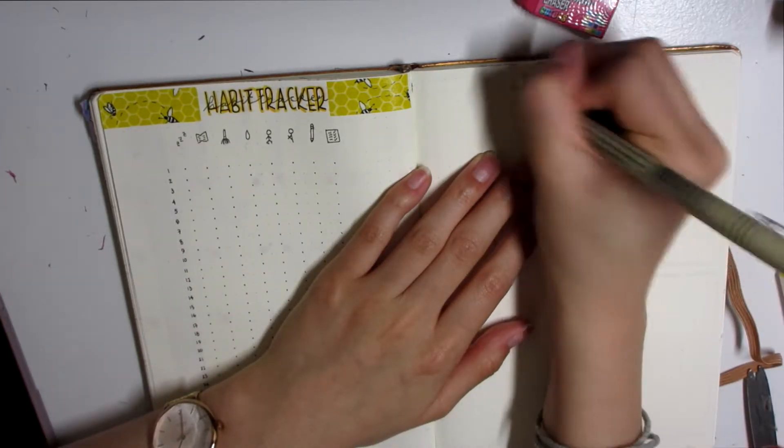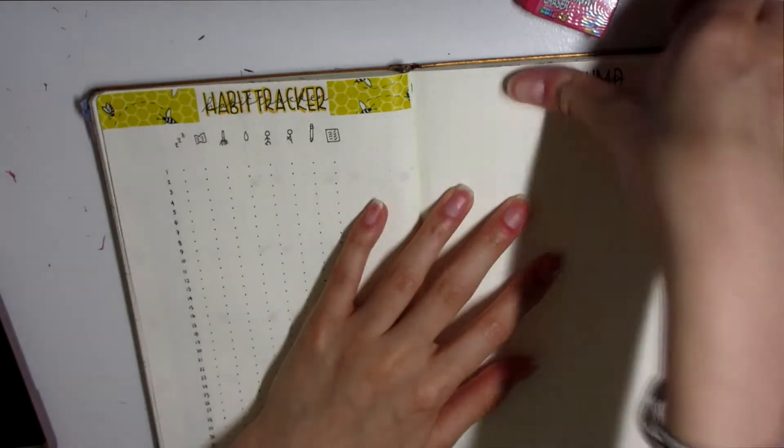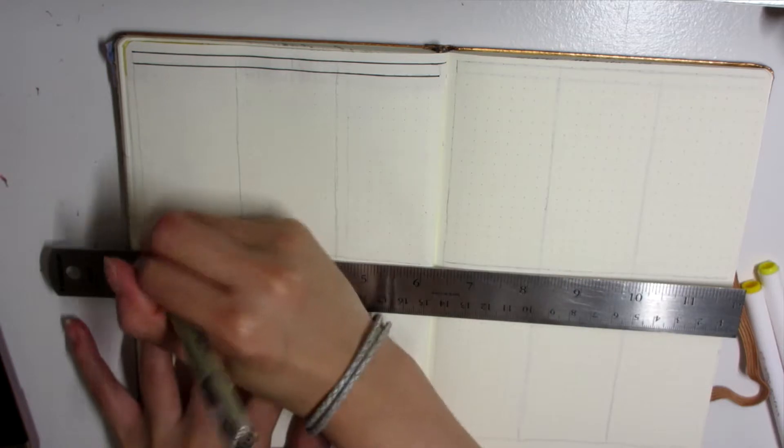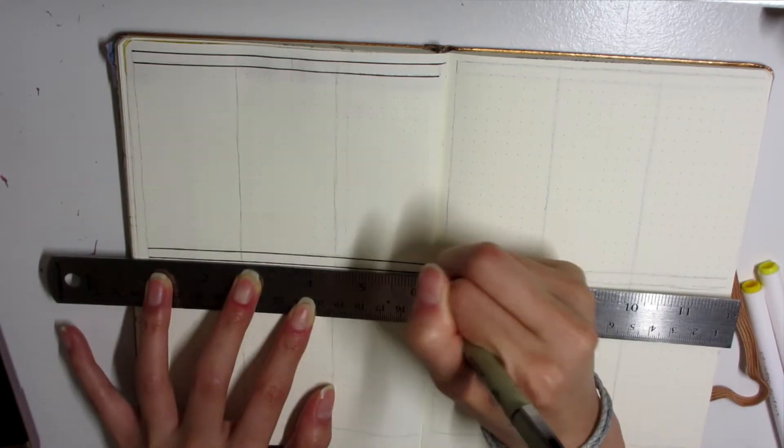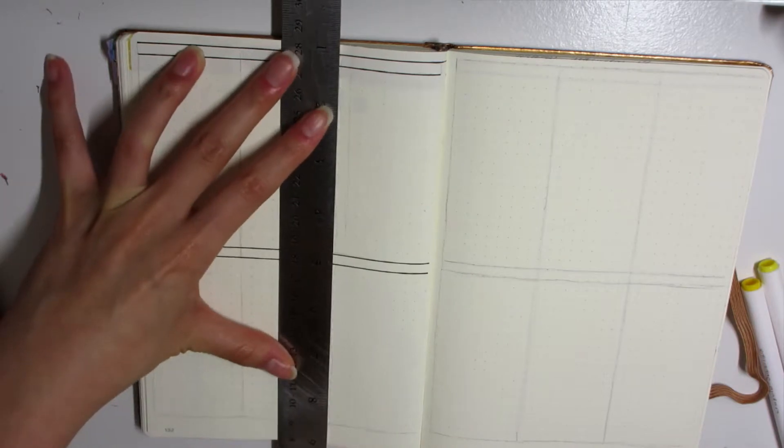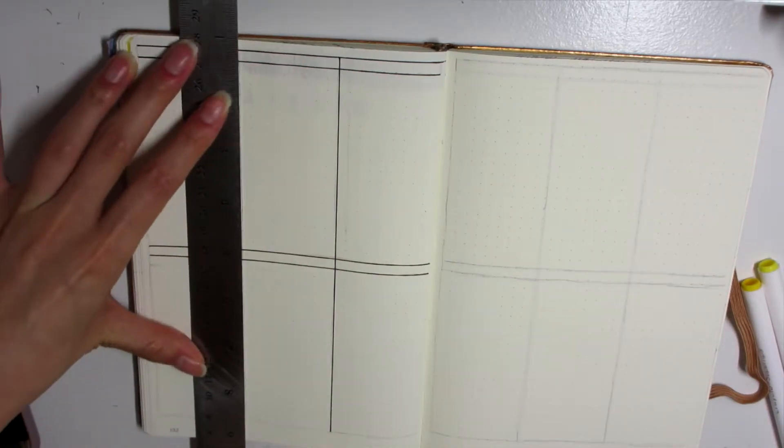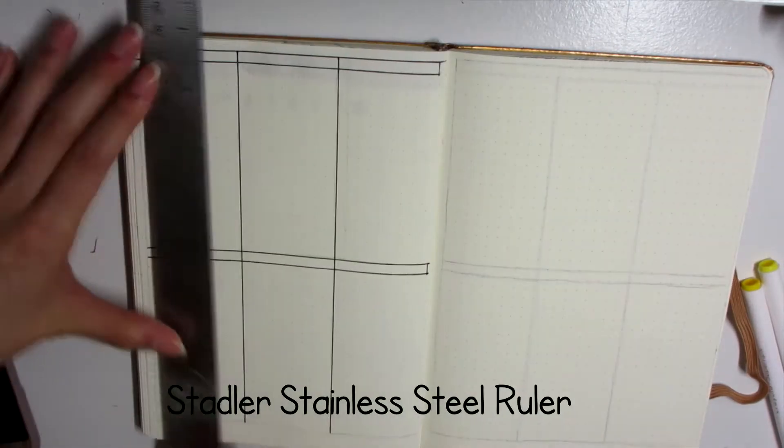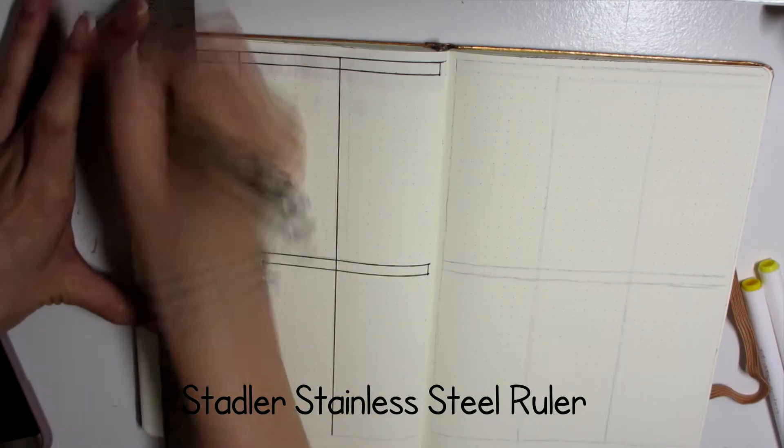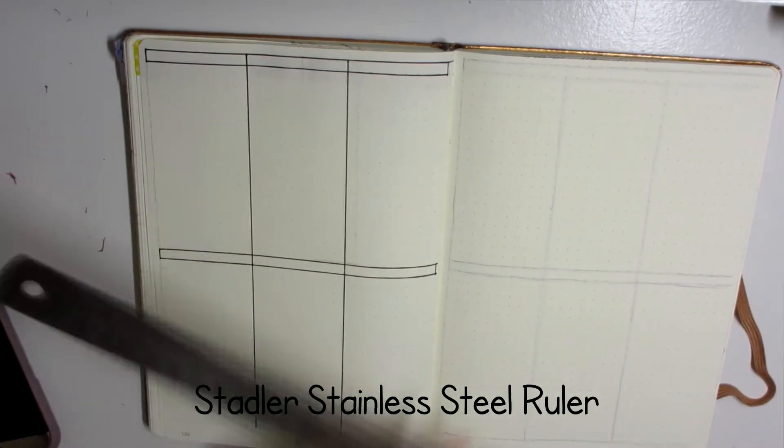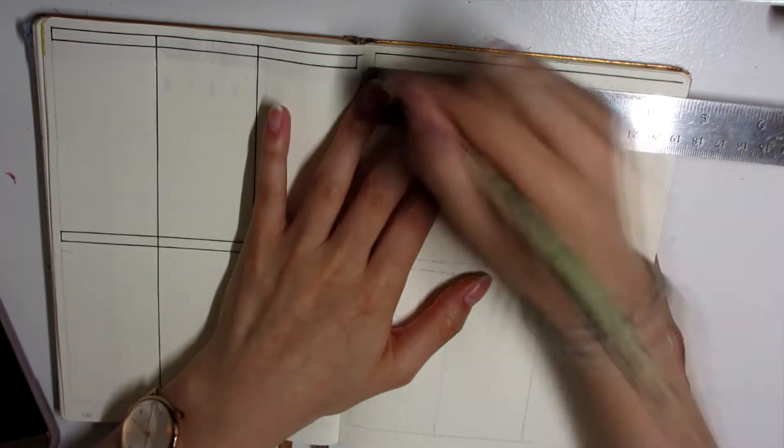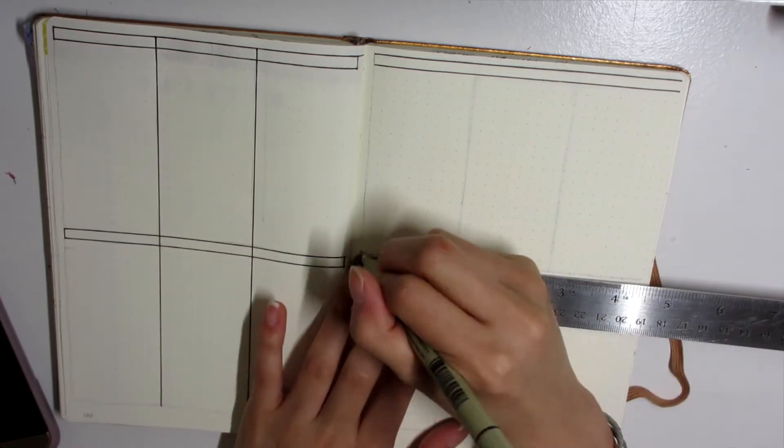The next spread is my brain dump spread. I didn't know necessarily what to do for this page because I'm really lazy with finance trackers, so I wanted to cut that out for this month and I will restart that in the summer, hopefully fingers crossed. Here I'm going in with my Micron pen and my Staedtler ruler in the stainless steel version to draw all the lines.